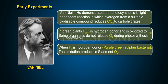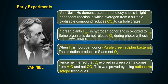When H2O is the hydrogen donor, as in purple-green sulfur bacteria, the oxidation product is S and not O2. Hence, Van Niel inferred that O2 evolved in green plants comes from H2O and not CO2. This was proved by using radioactive isotope techniques.